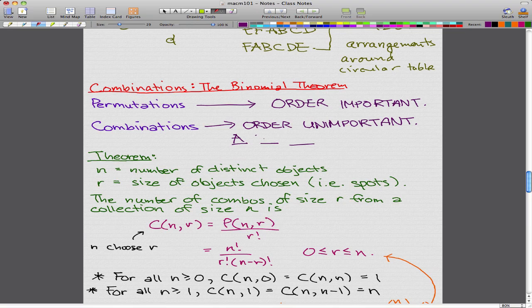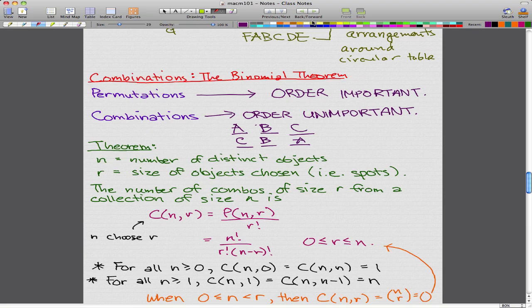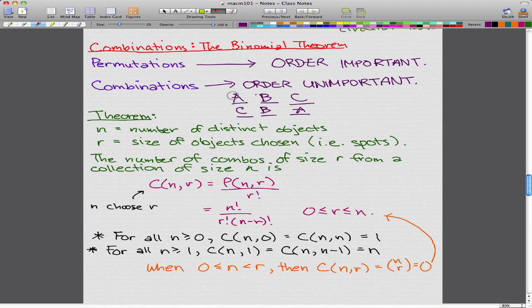Let's say we have A, B, and C. And C, B, and A. Now, these are two permutations. The order is important, but they are one combination because they use the same letter and order is unimportant. That's the kind of differences there are concerning combinations and permutations.